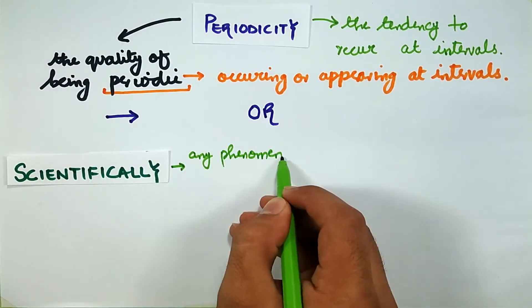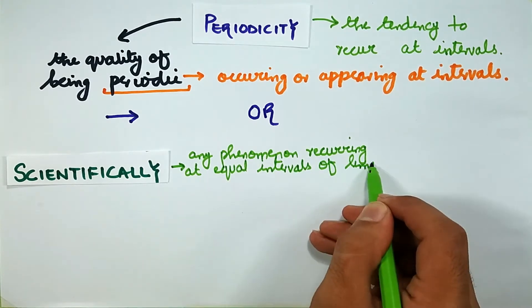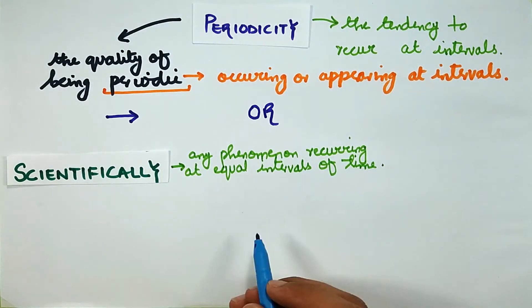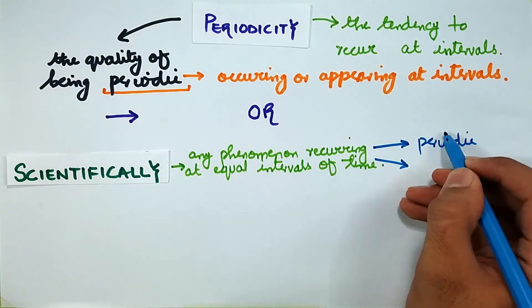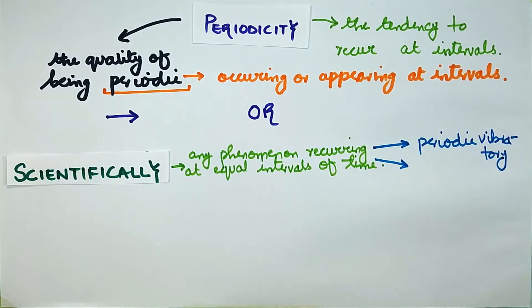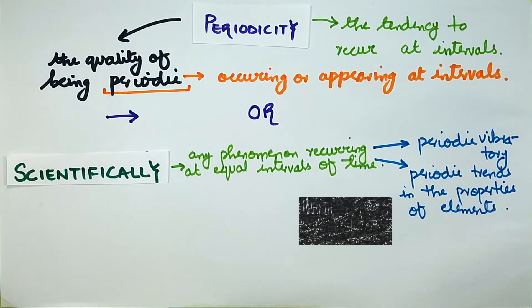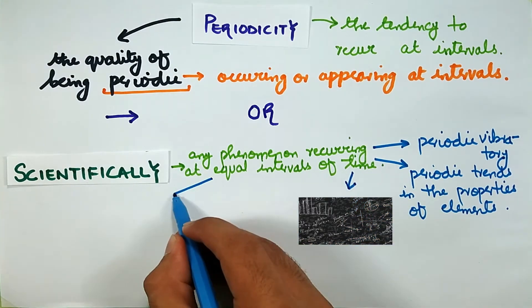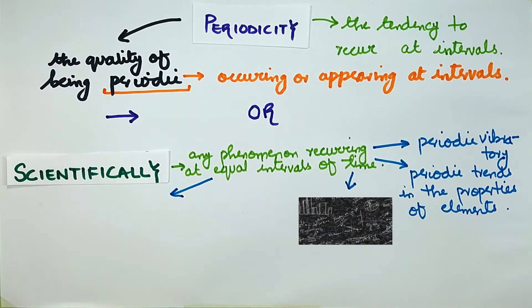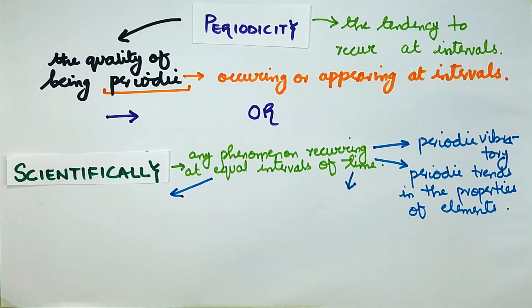In scientific language, it means any phenomenon recurring at equal intervals of time. It may be periodic vibratory motion or periodic trends in the properties of elements. It may be a mathematical graph that is periodic or repeats after a fixed interval of the independent variable, or periodic revolution of any heavenly body in astronomy.